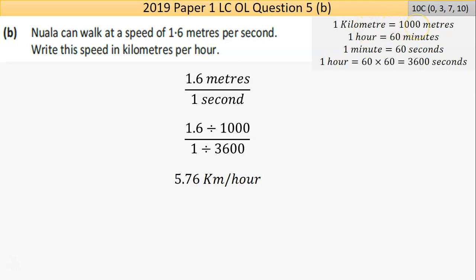So I've written them out here. One kilometer is the same thing as a thousand meters. One hour is the same thing as 60 minutes. Obviously, one minute is the same thing as 60 seconds. So we want to find out how many seconds in one hour, it's 60 times 60. So there's 3600 seconds in an hour.